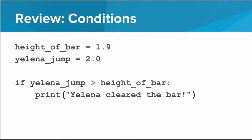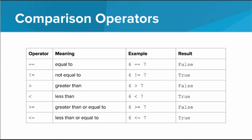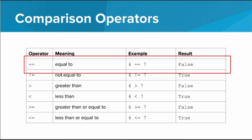Let's take a look at some more operators. Here they are: equal to, not equal to, greater than, less than, greater than or equal to, and less than or equal to. I want you to pay particular attention to the equal to operator. Notice that this uses two equals signs right next to each other. This is not the same as a single equals sign, which is used in an assignment statement. Single equals is for creating or changing a variable, whereas double equals is used for checking if two things are equal to each other.